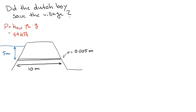On the right side of the dike, if the Dutch boy is not there to plug the hole, the pressure would simply be zero. You might say, why isn't it atmospheric pressure? Well, you're right — it actually is atmospheric pressure. But since we're only interested in the pressure difference from left to right, atmospheric pressure acts equally on both sides, so we ignore it and call the right side pressure zero.